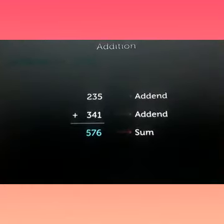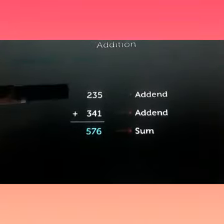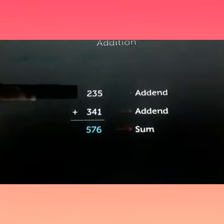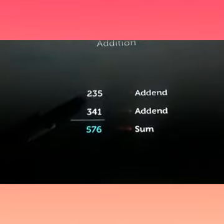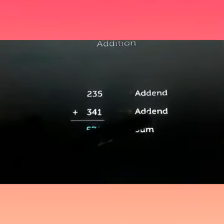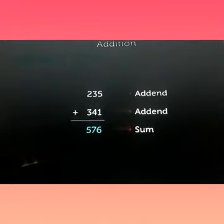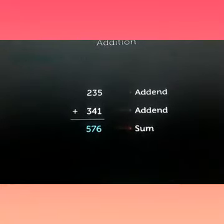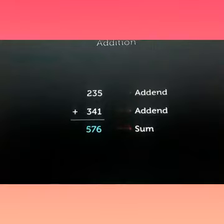As you all are aware of these terms used in addition. For example, if I add these two numbers 235 and 341, these two numbers are known as addends, and the result after adding both of them is 576, which is known as the sum. These are important terminologies to remember for addition.